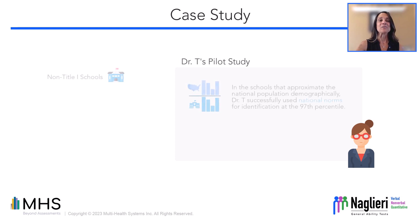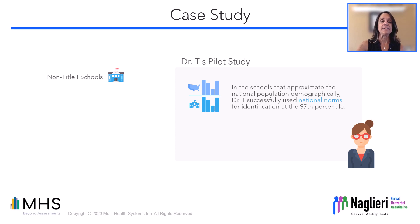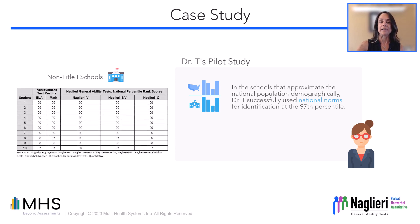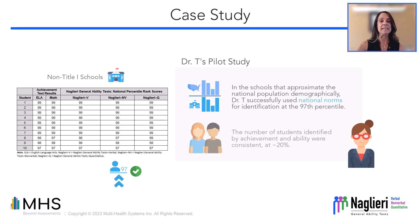In the schools that approximate the national population demographically, Dr. T successfully used national norms for identification at the 97th percentile or above. As you can see here, the number of students identified as gifted stayed relatively the same at approximately 20 percent of the population.